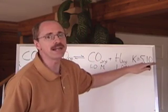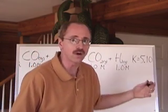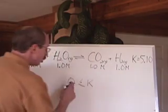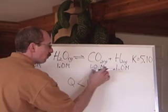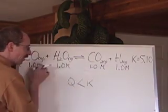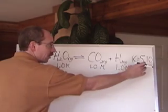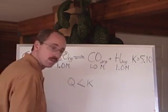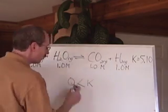But the K value says we want to be at equilibrium at 5.10. So that means you need to make more products and have less reactants to make that number go up to 5.1, which of course, as a Q, was the number 1.